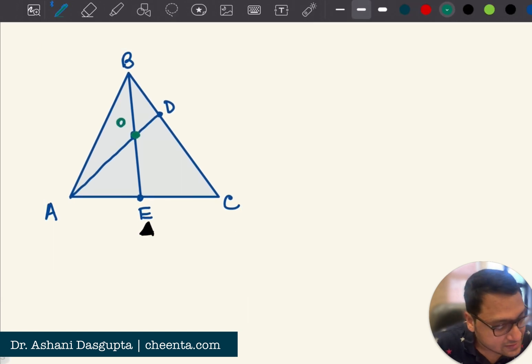space it again. So we know that BD is to DC is one is to two, one is to two, one is to two.